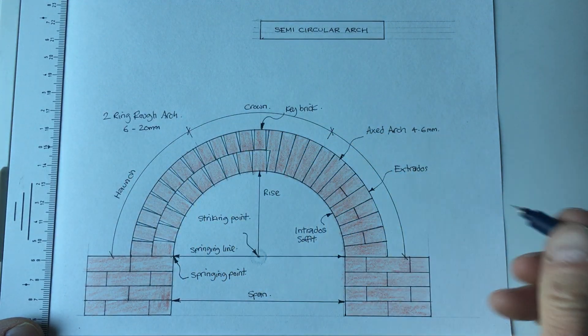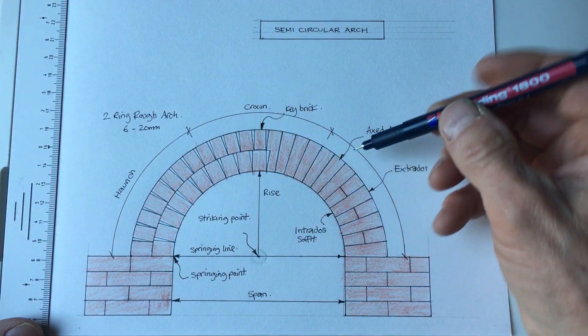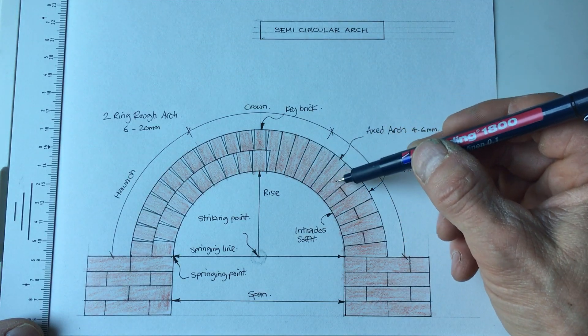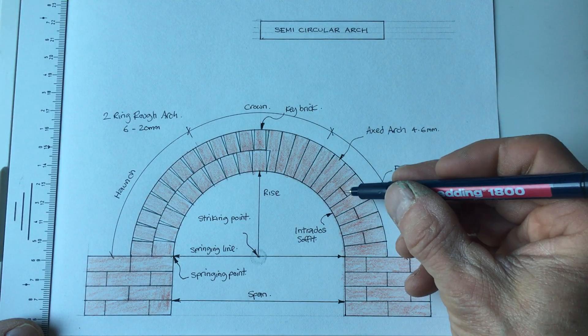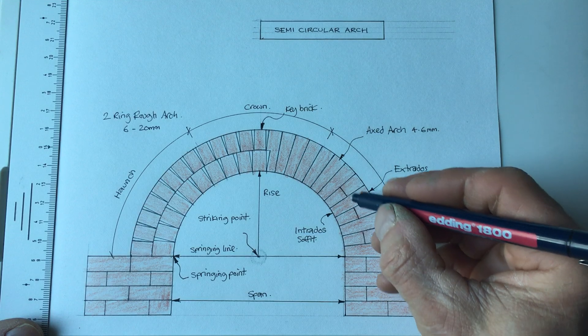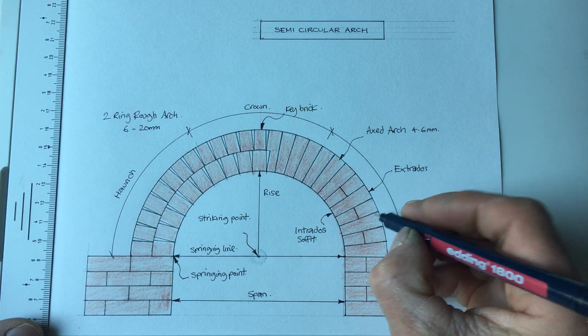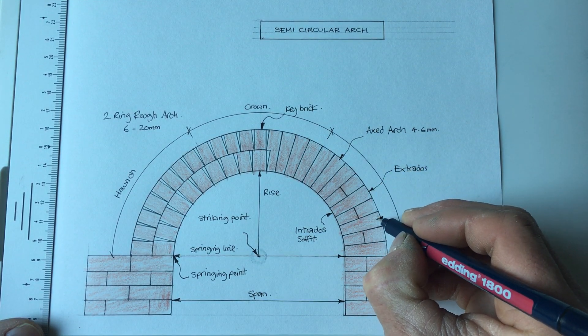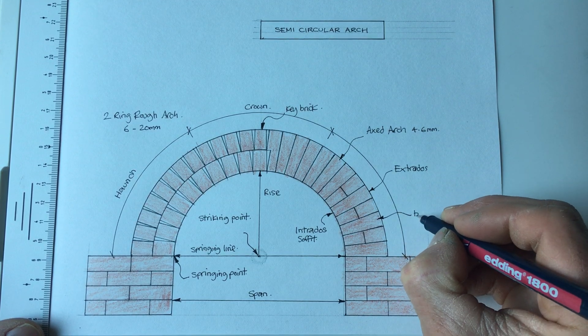And this part here where you see I've done it with stretchers there, so that's an axed arch. But here where we have headers in there as well, this would then be called a bonded arch.